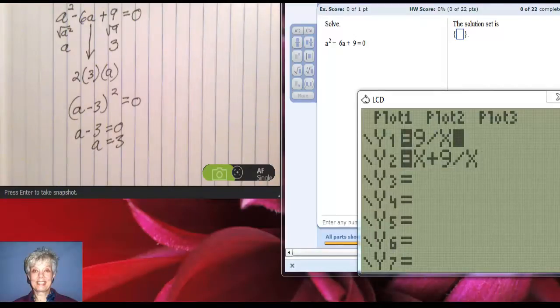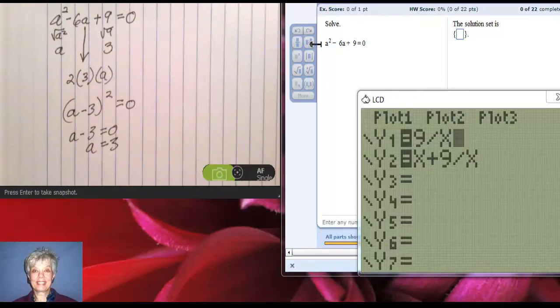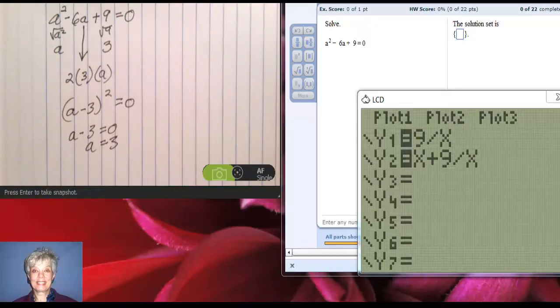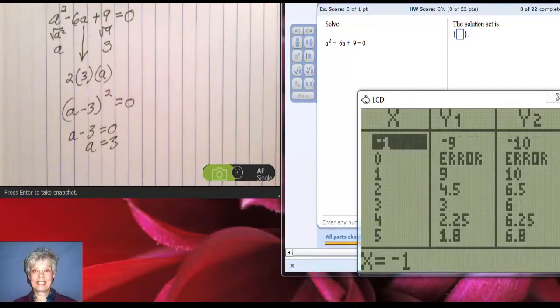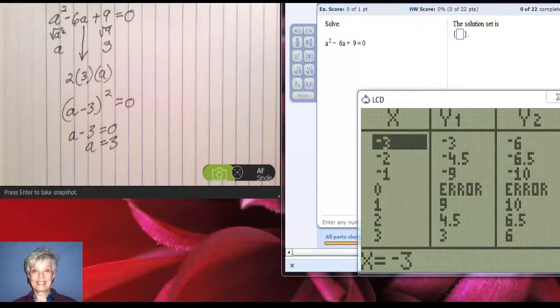1 times 9 is 9. So 9 over x and x plus 9 over x. Let's go to second graph. And there's a 6, but my b number is negative 6. So let's look for negative 6. Ah, there we go. And look at this. We have a -3 and a -3.